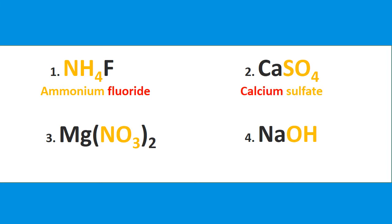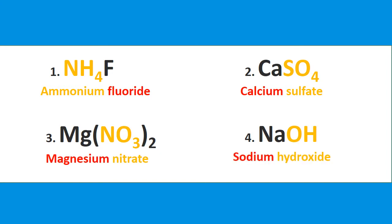Now you may say there's no charge shown, but if you look up your polyatomic ion chart, there's only one SO4 and it has a charge of negative 2. Also, in an ionic compound the total charge equals zero — since calcium has a charge of positive 2, the sulfate must be negative 2 so they cancel. Next, Mg is magnesium and we have nitrate, so that's magnesium nitrate. Then sodium and hydroxide gives us sodium hydroxide.